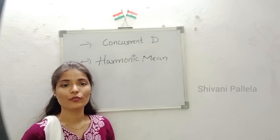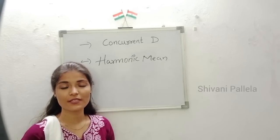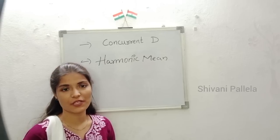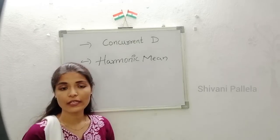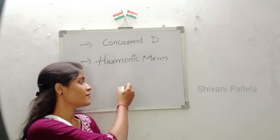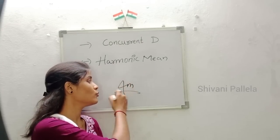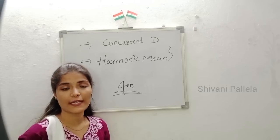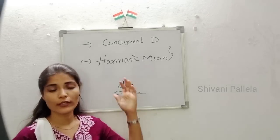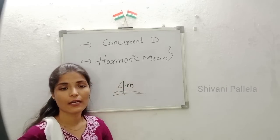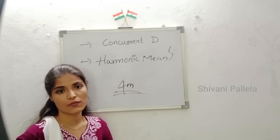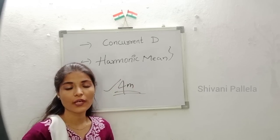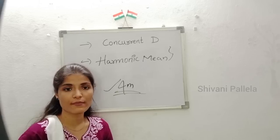Hello all, welcome back to our channel. In this video we are going to discuss the problematic questions which will definitely come in the business statistics examination in Part A — that is concurrent deviation and harmonic mean. One or two methods may be asked in Part A that are problematic. We will calculate how to find concurrent deviation and harmonic mean, where you can easily score four marks in Part A.